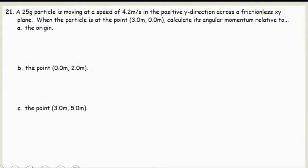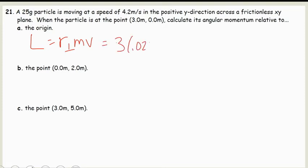Question number 21: a 25 gram particle is moving at a speed of 4.2 meters per second in the positive y direction across a frictionless xy plane. When the particle is at position (3.0 meters, 0.0 meters), calculate its angular momentum relative to the origin. Remember, the angular momentum of a point equals the perpendicular radius times m times v.